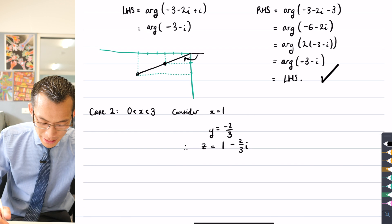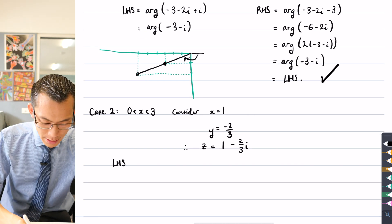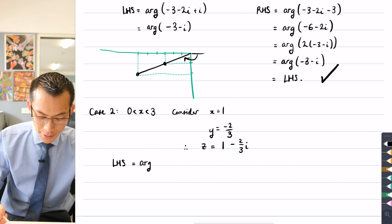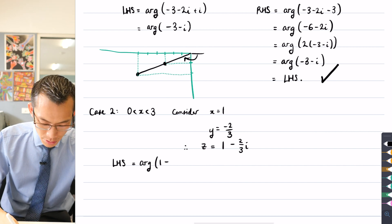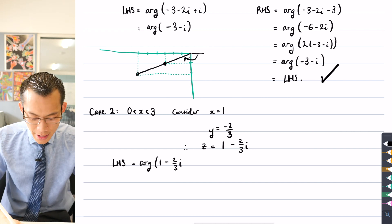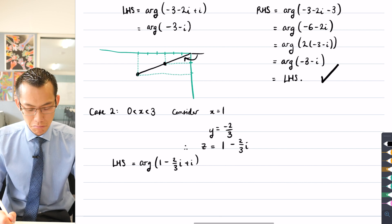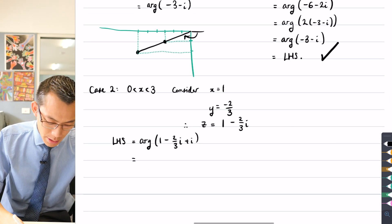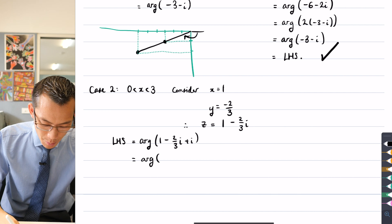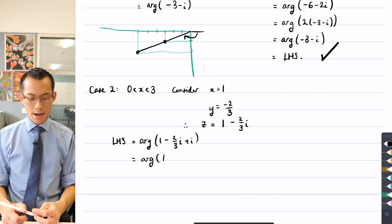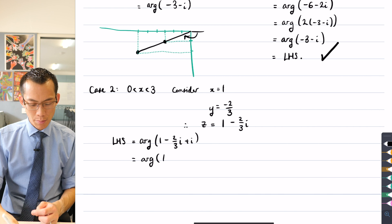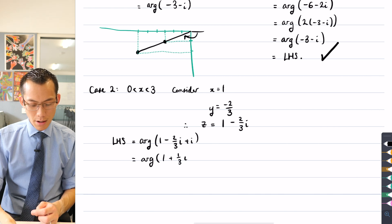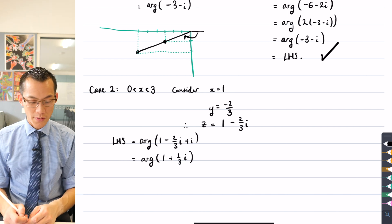So what's my left-hand side going to be? Well, my left-hand side is equal to arg of my complex number one minus two thirds i. And then I'm adding i. Okay, so this is arg of one. Now minus two thirds i plus i, that's going to be plus a third i. Okay, so far so good.